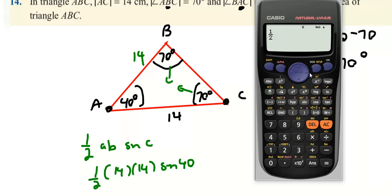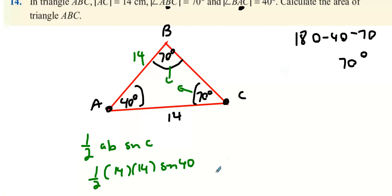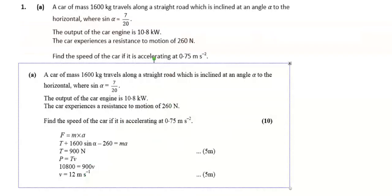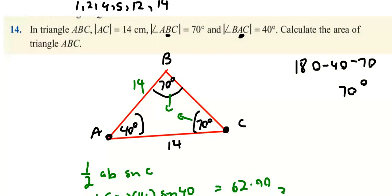So I have 14 times 14 sine 40. So what you get is 62.99 or 63 meters squared. And that's us done with those questions.